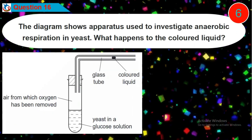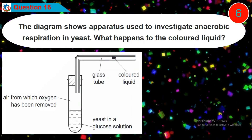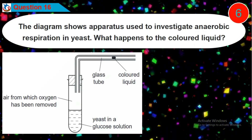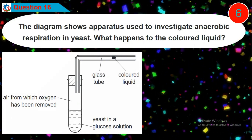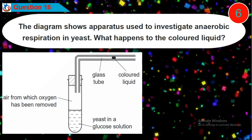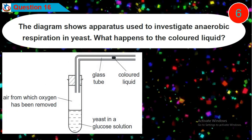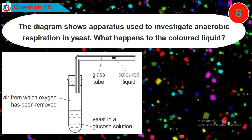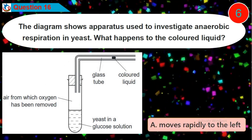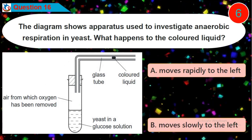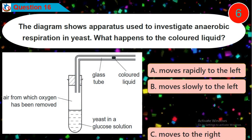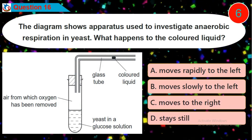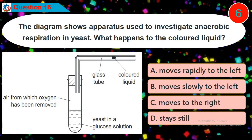Question 16: The diagram shows apparatus used to investigate anaerobic respiration in yeast. What happens to the colored liquid? Is it option A, B, C, or D?